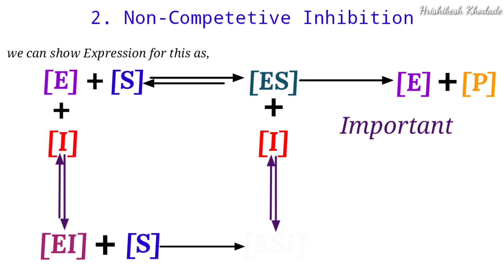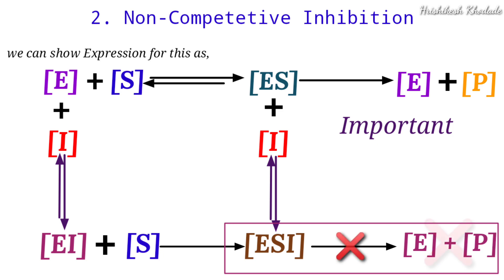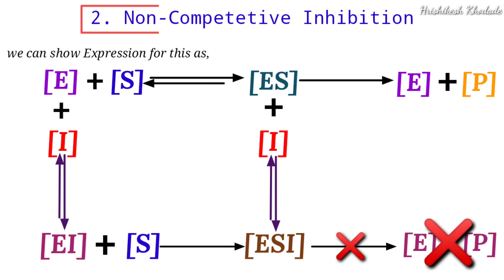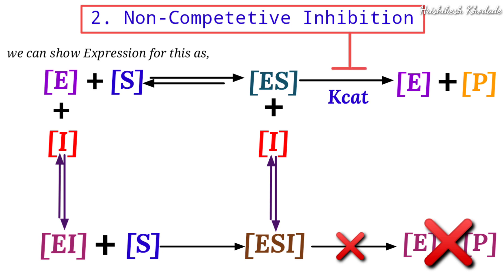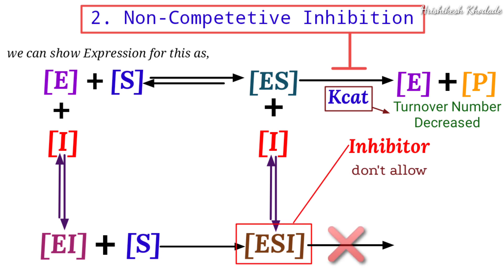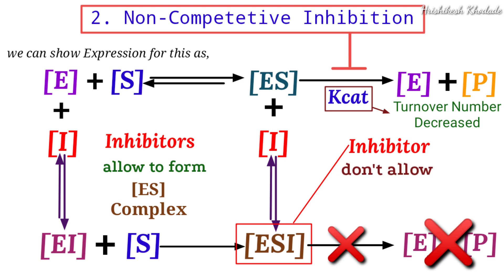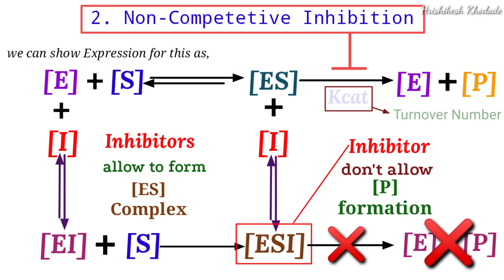Once the inhibitor is present, the enzyme-substrate complex is not able to deliver a product. In non-competitive inhibition, the kcat value — the turnover number — is affected, because the inhibitor does not allow the enzyme-substrate complex to break down into separate enzyme and product. The inhibitor allows formation of the enzyme-substrate complex but does not allow formation of the product, impacting the total rate of reaction.